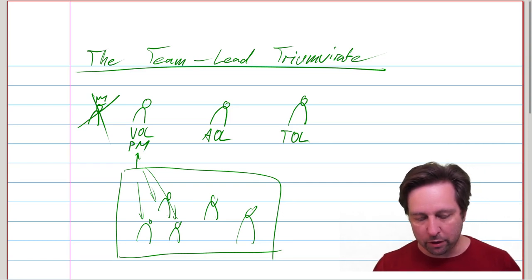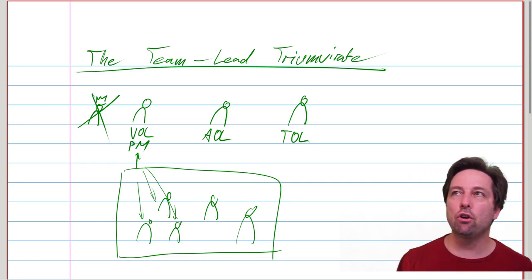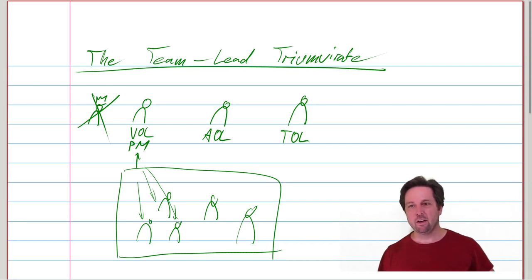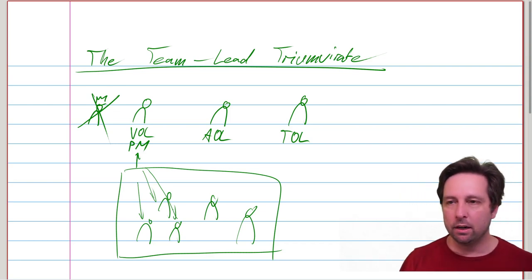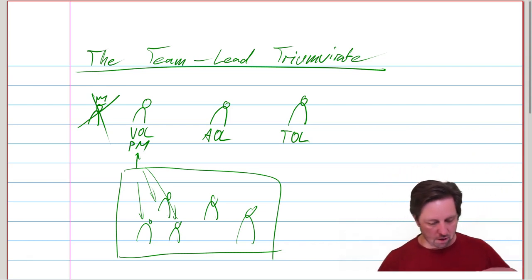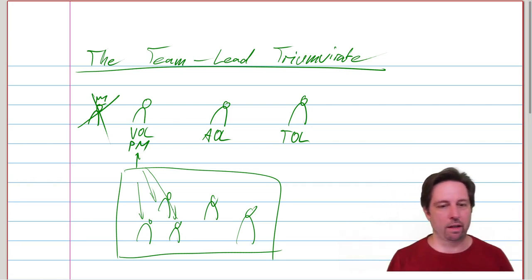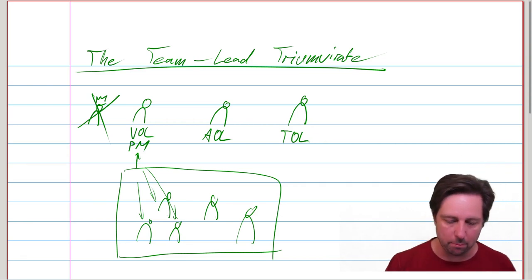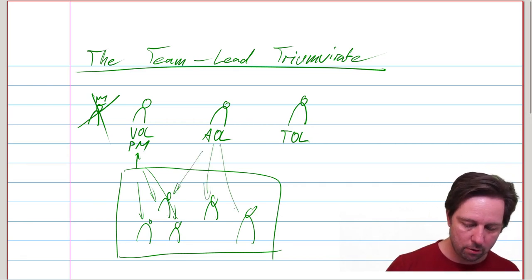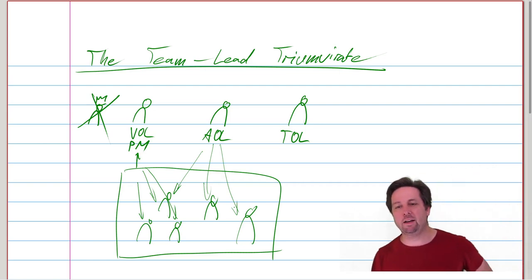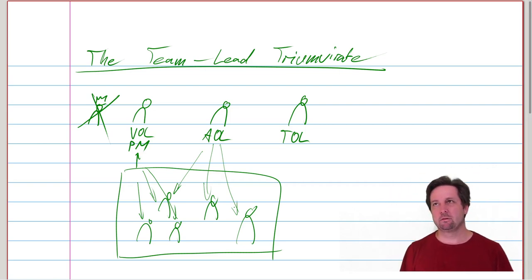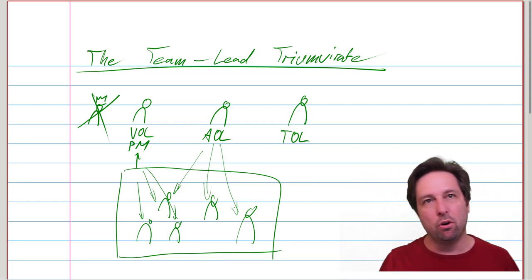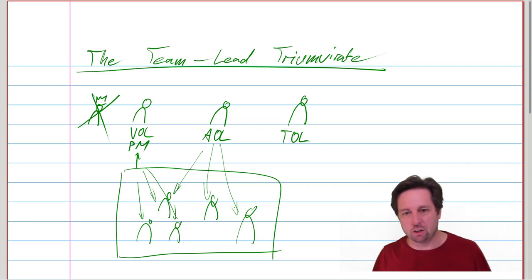Similarly, you've got an architecture outcome lead. This is not your traditional enterprise architect sitting in his ivory tower and declaring structures that must be followed. This is somebody who supports the team in coming up with an architecture autonomously. And of course, the architecture outcome lead, just because they see a lot more, they've got a lot more conversation going on with different members of this big team.